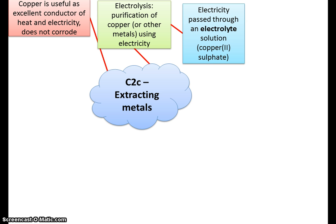Now we're going to look at how we can get pure copper through the process of electrolysis. Electrolysis is basically where you have a solution, pass electricity through it, and by doing that you are moving the electrons around to create two processes — reduction and oxidation — and by doing this you are making pure copper.